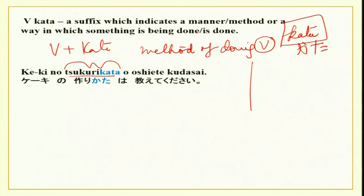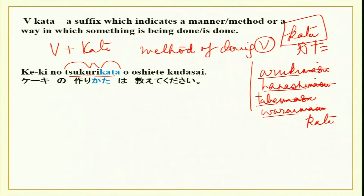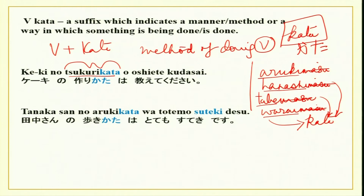So: aruki-kata — way of walking, hanashi-kata — way of talking, tabe-kata — way of eating, warai-kata — manner of laughing. It could be good or bad. Keeki no tsukuri-kata wo oshiete kudasai — please tell me the way to make cake. All you need to do is remove the masu form and put kata. Verb plus kata means method of doing whatever the verb says.